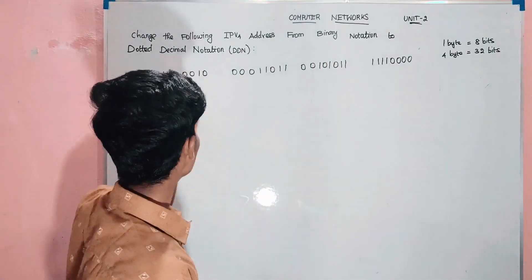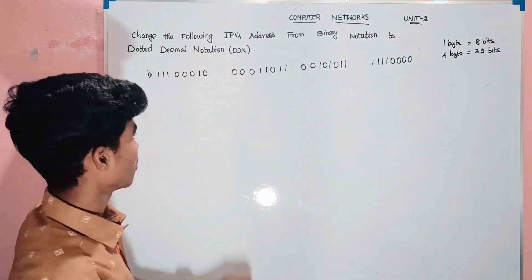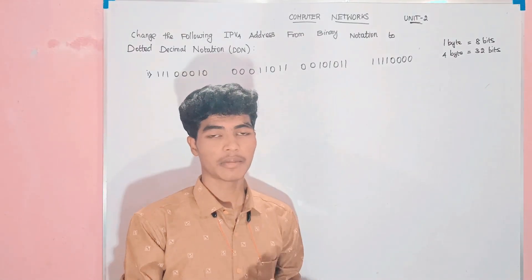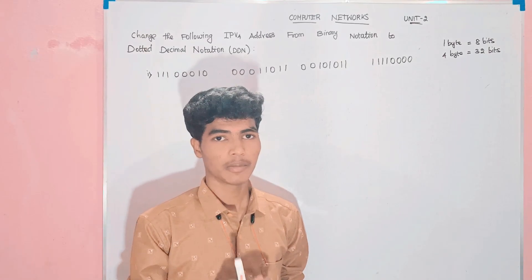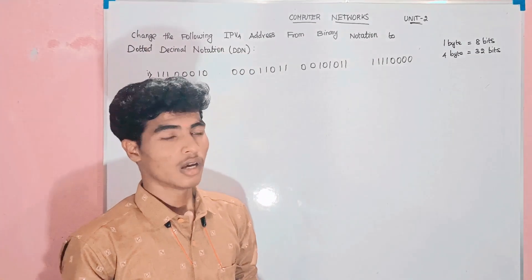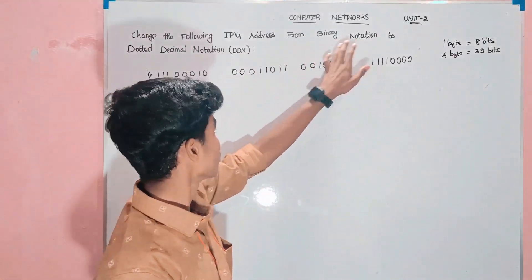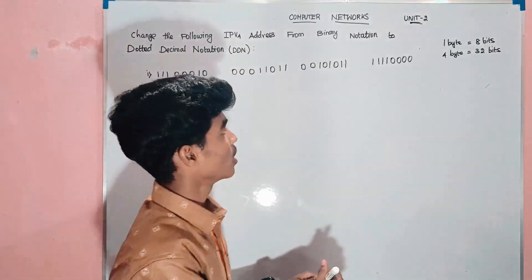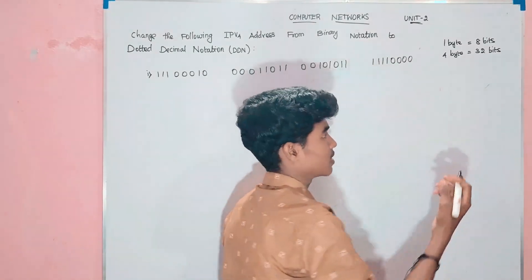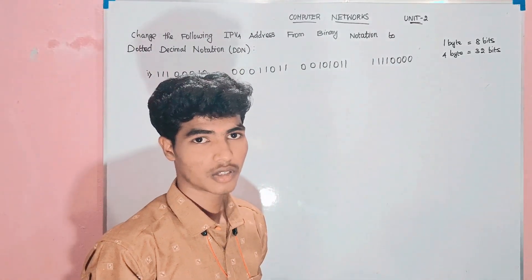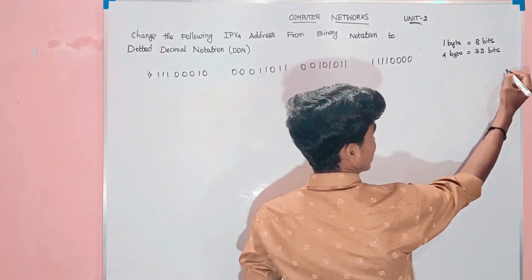From binary notation to dotted decimal notation. If we say that, we will solve the binary method. To convert binary notation to dotted decimal notation, for example, if we are binary to dotted decimal or decimal, we will use the same method. First, binary notation is...